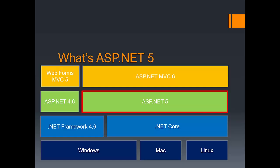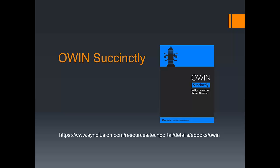ASP.NET 5 is a complete rewrite of the Microsoft web stack and has been designed with modularity as its first pillar. This allows applications to run in high-density scenarios like cloud computing without requiring too many resources. ASP.NET 5 is completely open source, and thanks to running on .NET Core, different versions of the framework can run side by side on the same server, avoiding versioning problems. The architecture of ASP.NET 5 has also been deeply influenced by OWIN.